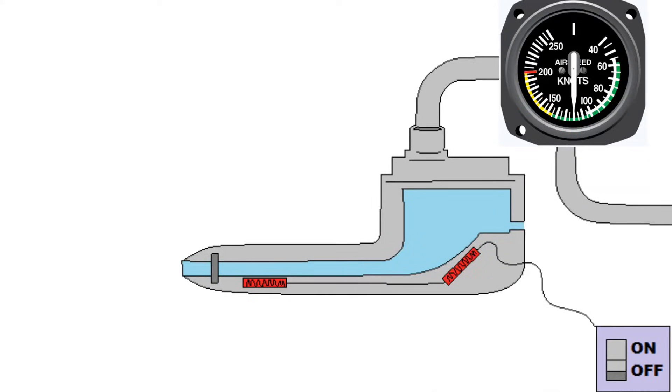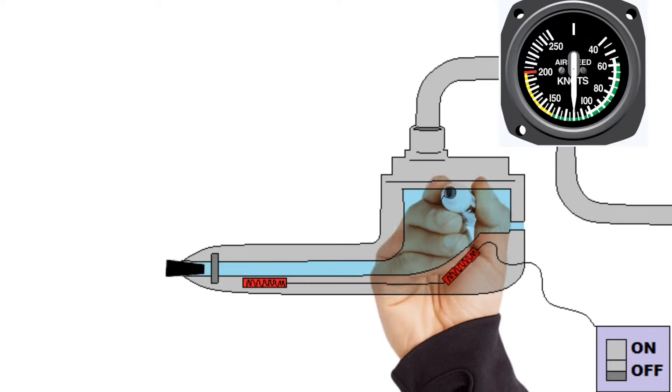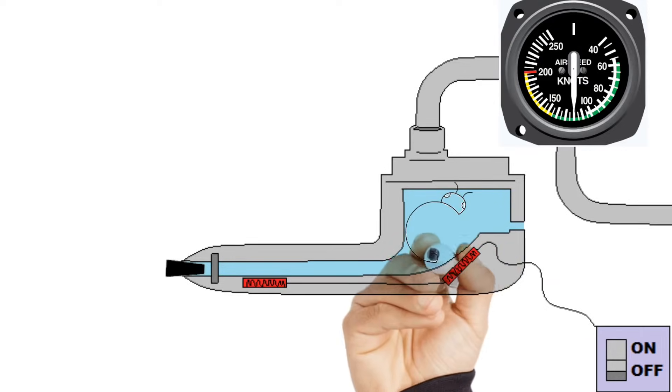Something else you could run into that would cause these instruments to get errors is if the pitot tube or the static port got clogged up. And there's a lot of different things that could clog up these things: anything from bugs, mud, ice, and that's just to name a few.